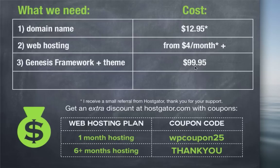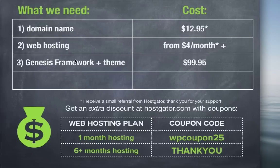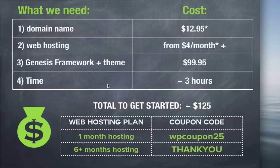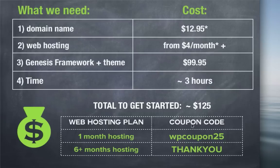Once we have the domain name and web hosting, the next thing we'll need is the Genesis Framework and the child theme, both of which we can get at studiopress.com for $99.95. This is a one-time purchase fee that also includes unlimited updates and unlimited support. Once we have the domain name, web hosting, framework, and theme, we'll need about three hours to put it together. The total to get started with this particular website is around $125.